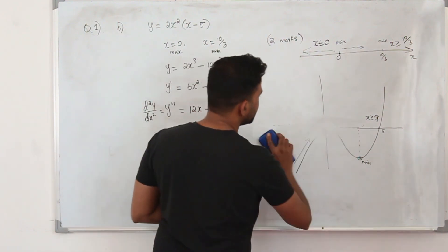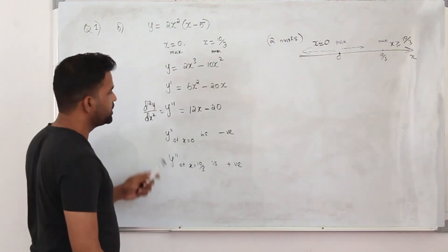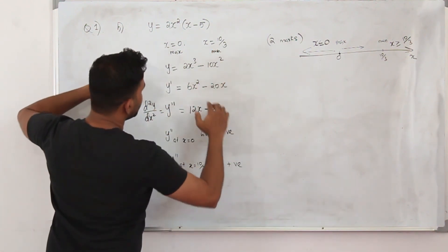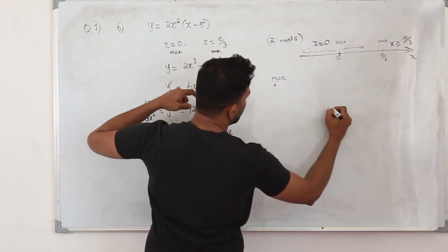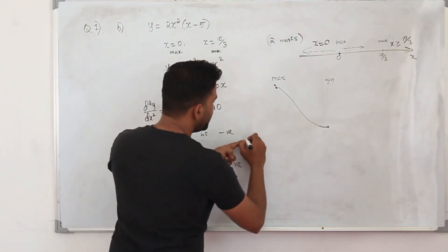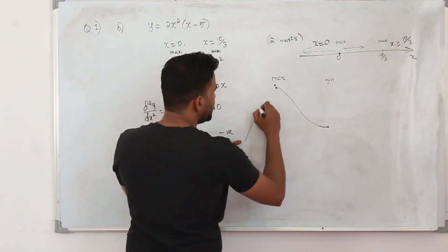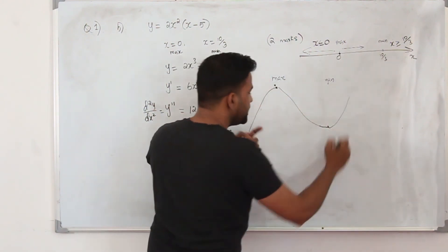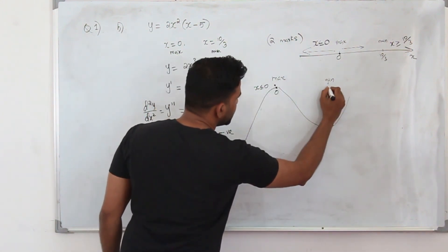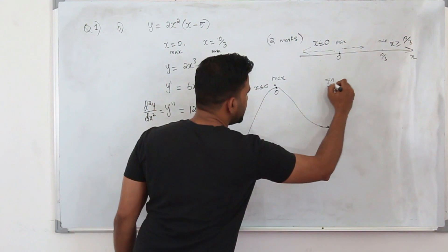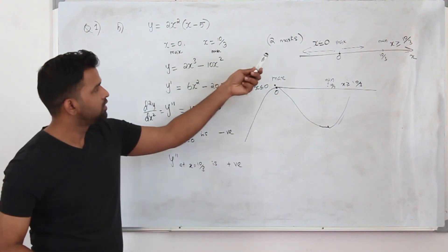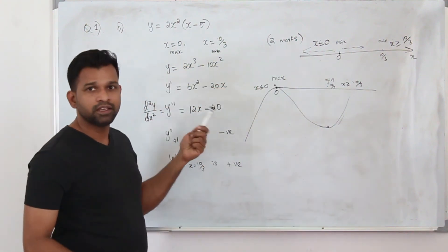So we don't even need to sketch this graph. You can straight away say: x equals 0 is a maximum point and x equals 10/3 is a minimum point. The graph decreases between maximum and minimum, must be increasing before the maximum, and increasing again after the minimum. Therefore, for 2 marks, the answer is x ≤ 0 or x ≥ 10/3, with no need to sketch the graph.